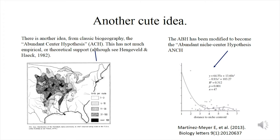There is another related idea called the Abundance Center Hypothesis, proposed by Hengeveld and Heck in 1982, with a fair amount of empirical support. The idea says that the number of individuals in a distribution is higher at the geographic center of the distribution. Hengeveld and Heck used very coarse grid data to support this — you can see the kind of data they used in the map there. They used the breeding bird survey data at that time.